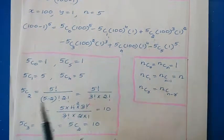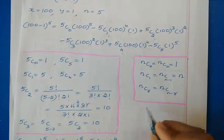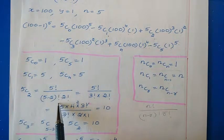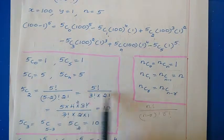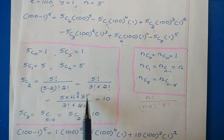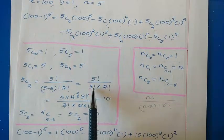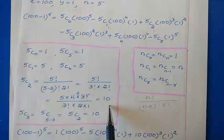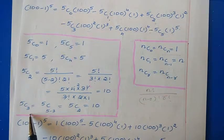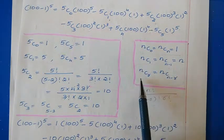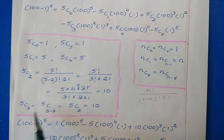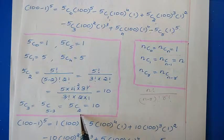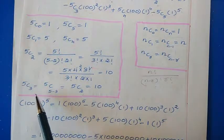Finding the combination values: 5c0 and 5c5 equal 1; 5c1 and 5c4 equal 5. For 5c2: 5! divided by 3! times 2! equals 10. For 5c3, using ncr equals nc(n minus r): 5c3 equals 5c2 equals 10.